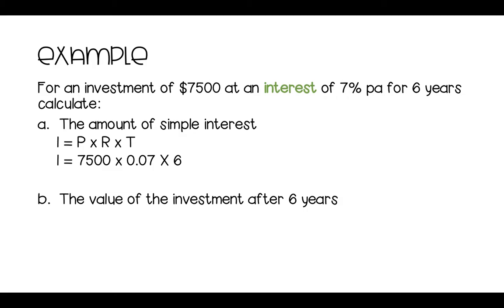Times 0.07, which is our percentage, our interest, times six years, which is our time. From there, we're going to solve this. So we receive, after six years, $3,150 interest.